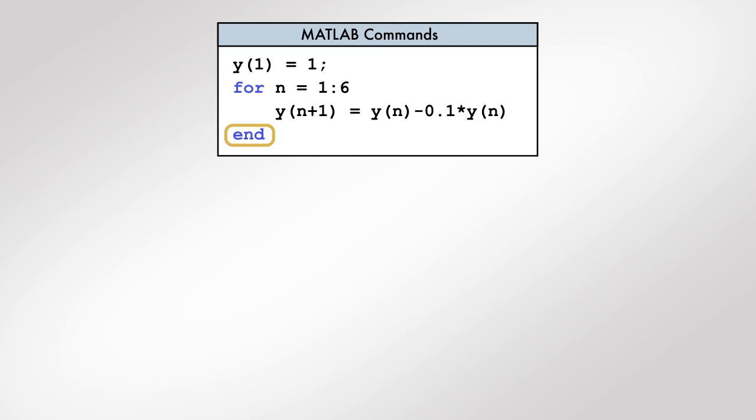The for loop terminates with the keyword end. The set of commands between the start and end of the for loop is called the body of the for loop. Typically, these commands depend on the value of the loop variable.